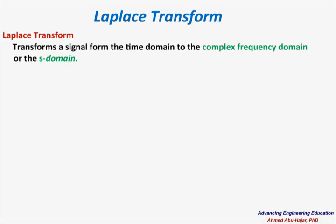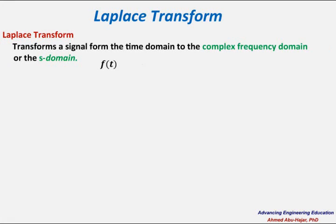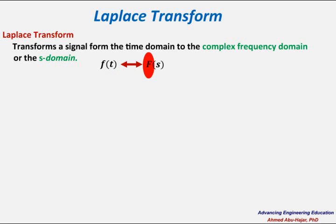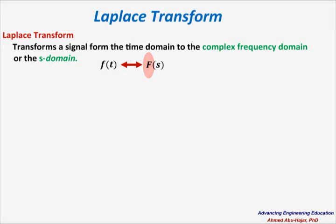So you have a signal f of t, and you are going to convert it to a new signal called F of s. Note that when we use the S domain we convert the name of the signal from a small letter f to a capital letter F. This is very standard in most textbooks, though not all textbooks will follow this convention.